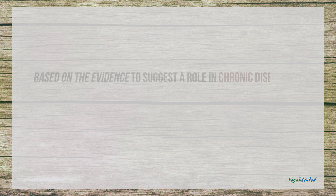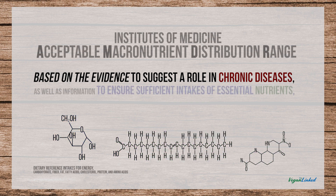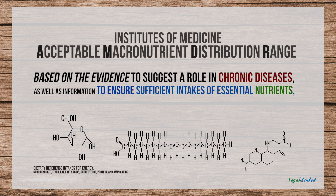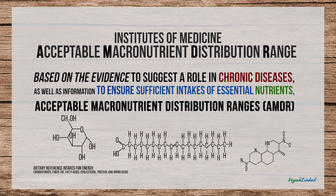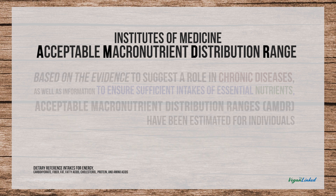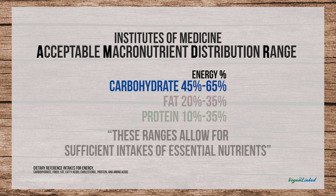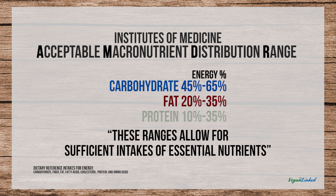Based on the evidence to suggest a role in chronic diseases, as well as information to ensure sufficient intakes of essential nutrients, acceptable macronutrient distribution ranges have been estimated for individuals. These are carbohydrates 45 to 65 percent, fat 20 to 35, protein 10 to 35.